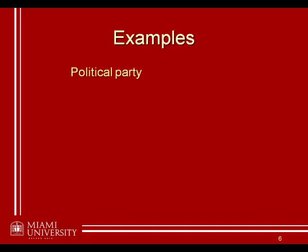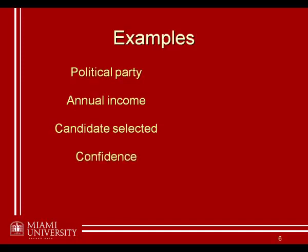I'll give you a minute to think about what are maybe four different variables that came up. The first variable is political party — we asked people whether they're Democrat, Independent, Republican, or a member of some other party. We also asked people what their annual income is. We then wanted to know what candidate they selected — for whom they voted in the presidential contest. And finally, we asked them what is their confidence that they made the right decision.